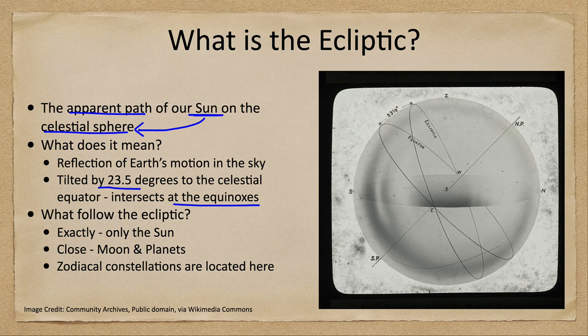Now if you recognize that 23 and a half degree number, that is actually the tilt of Earth's axis, and that affects the difference between the ecliptic and the equator. If the Earth were not tilted at all, the ecliptic and the equator would be exactly the same line. If the Earth were tilted more, there would be a bigger angle between them. So the angle between these two is also the tilt of Earth's axis.